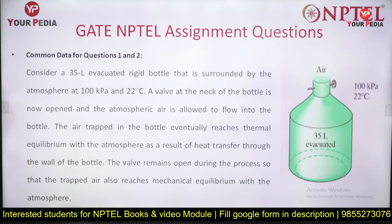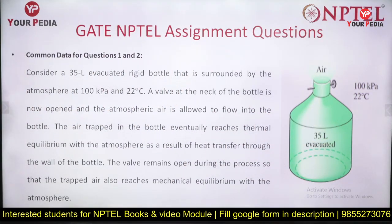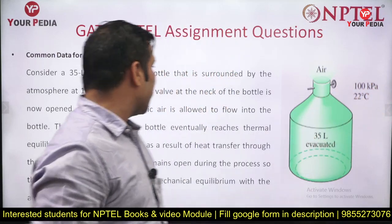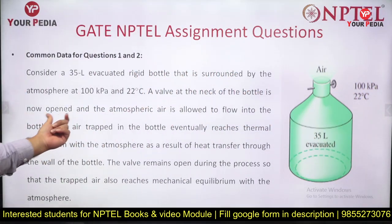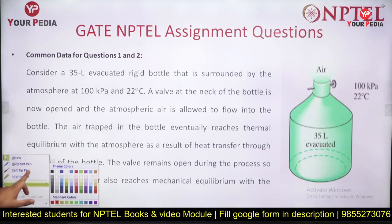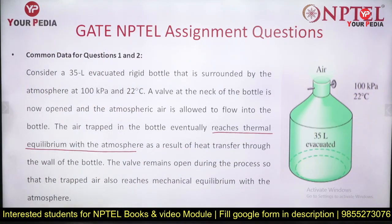Consider a 35-liter evacuated rigid bottle surrounded by atmosphere at 100 kPa and 20°C. A valve at the neck of the bottle is opened and atmospheric air is allowed to flow in. The air trapped in the bottle eventually reaches thermal equilibrium with the atmosphere — this is a very important point — as a result of heat transfer through the walls of the bottle.